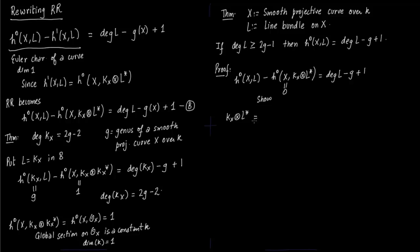So let us show this is 0. So kx tensor with L star. So take the minimum possible value of degree of L. That is 2g-1. So this will be O(-d) where d is at least 1. So if you take any line bundle which is greater or equal to 2g-1, you will get this sheaf after you tensor it as O(d) where d is greater or equal to 1.